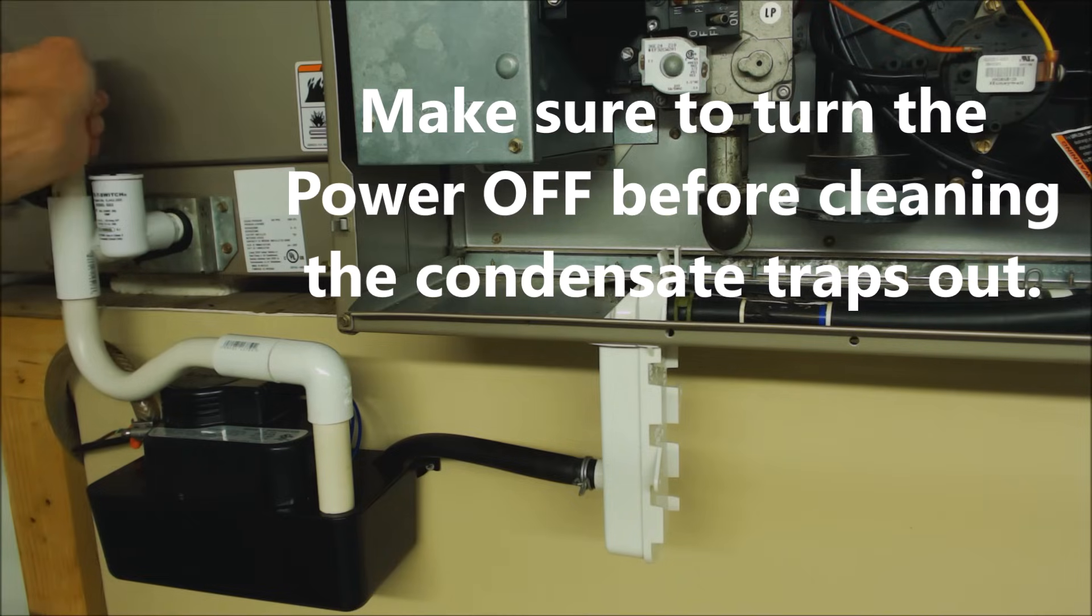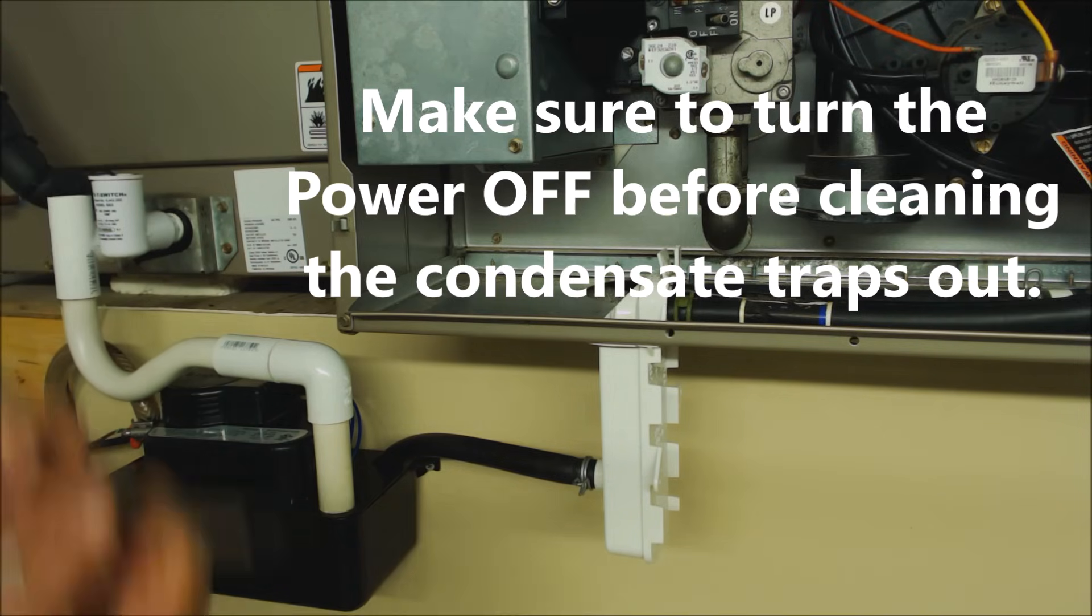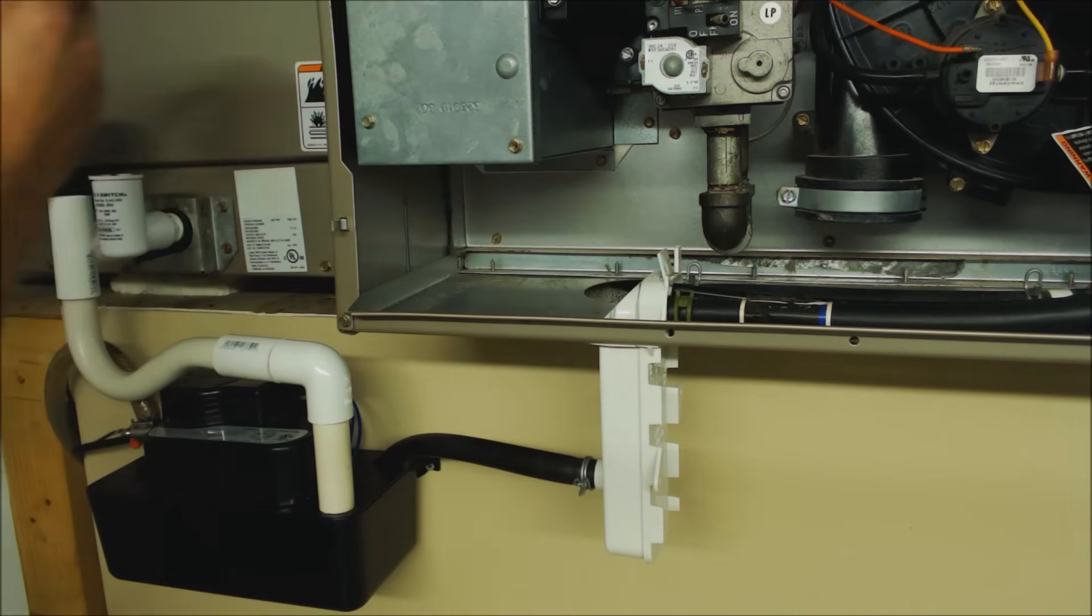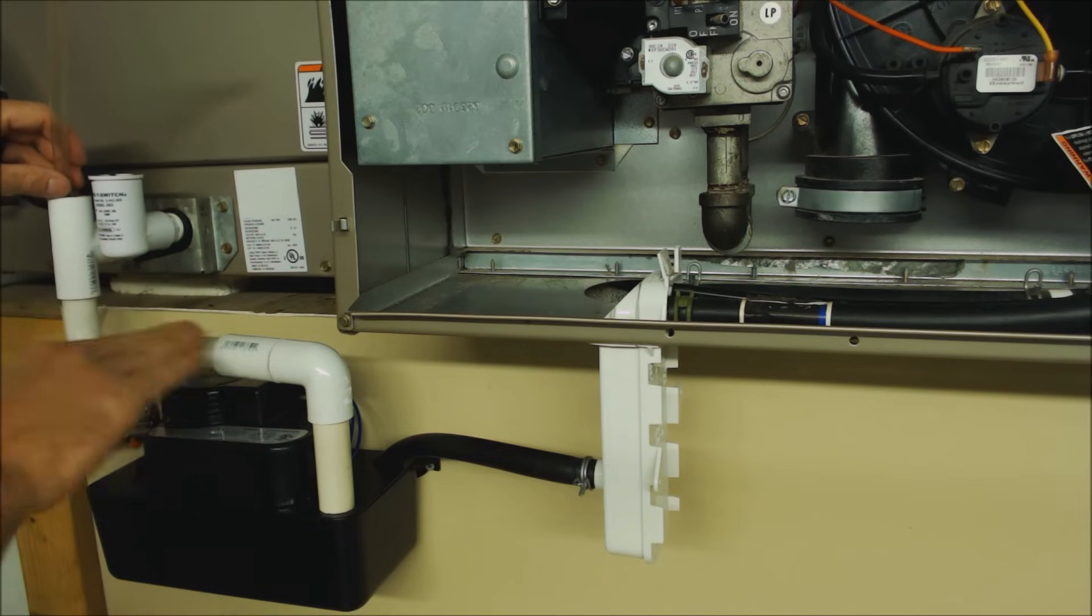So a simple technique is just to blow it out with a ten cent piece of clear vinyl tubing and then some electrical tape. You just stick that right down in there and then you go ahead and blow and that pushes it forward. The issue is it's still in there but at least you got that unclogged and the system will operate.